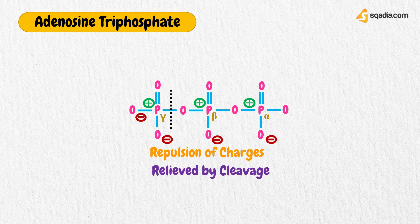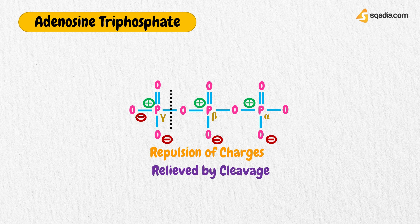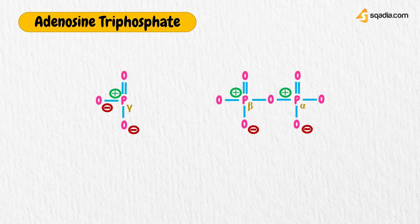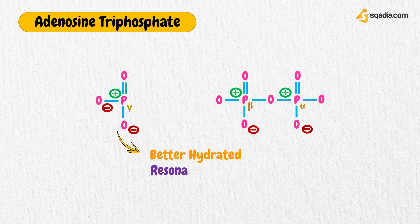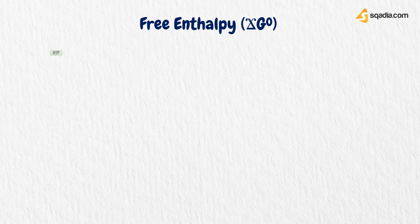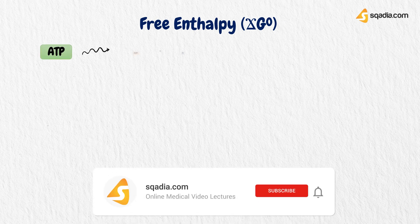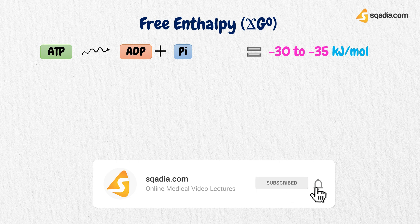This repulsion is partly relieved by cleavage of a phosphate residue. In addition, the free phosphate anion formed by hydrolysis of ATP is better hydrated and more strongly resonance-stabilized than the corresponding residue in ATP; this also contributes to the strongly exergonic character of ATP hydrolysis. In standard conditions, the change in free enthalpy, shown as delta-G, that occurs in the hydrolysis of phosphoric acid-anhydride bonds amounts to minus 30 to minus 35 kilojoules per mole at pH 7.